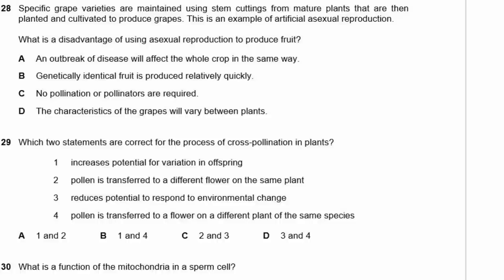Question 28: Specific grape varieties are maintained using stem cuttings — an example of asexual reproduction. What is a disadvantage? Asexual reproduction produces clones, so an outbreak of disease will affect the whole crop in the same way — that's the answer, A. Producing genetically identical fruit quickly and needing no pollinators are not disadvantages, and characteristics won't vary between plants with asexual reproduction.